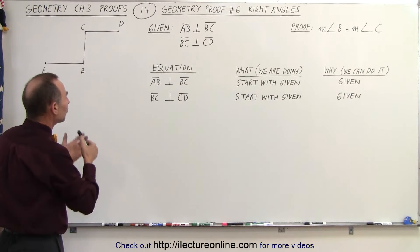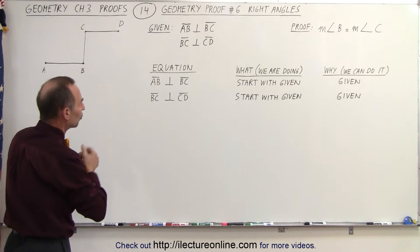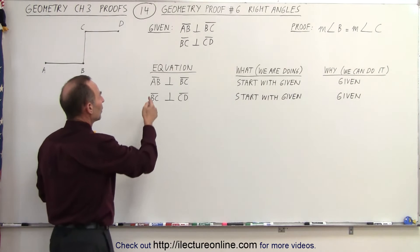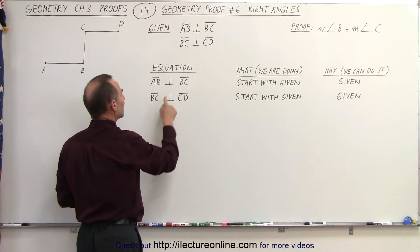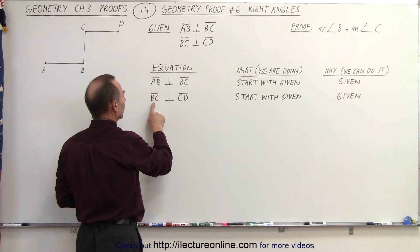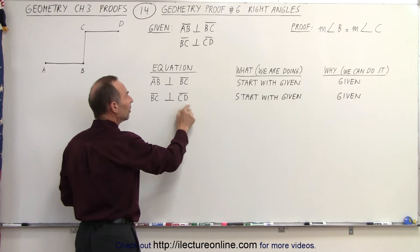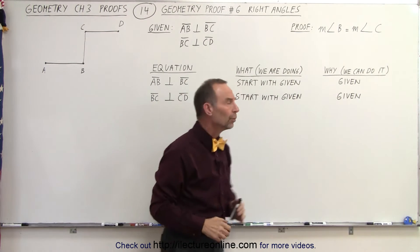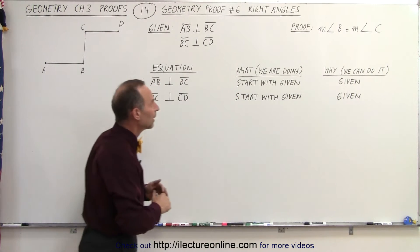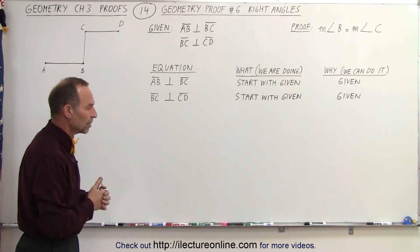Let's start with stating what is given. There are two statements given: line segment AB is perpendicular to line segment BC, and line segment BC is perpendicular to line segment CD. We start with what's given, and the reason is simply that it was a given statement.